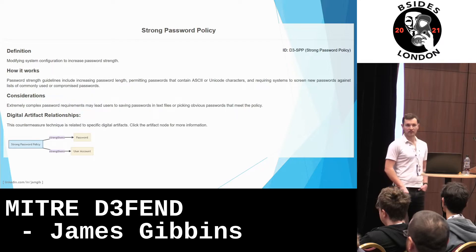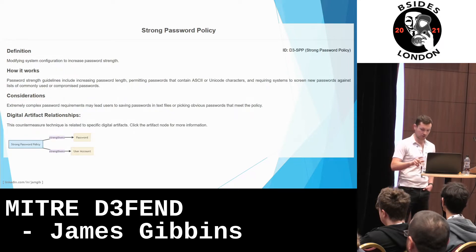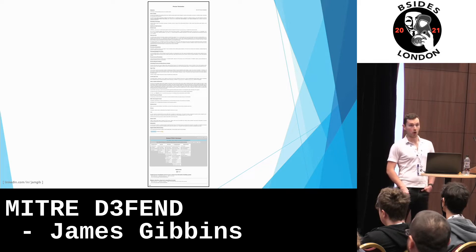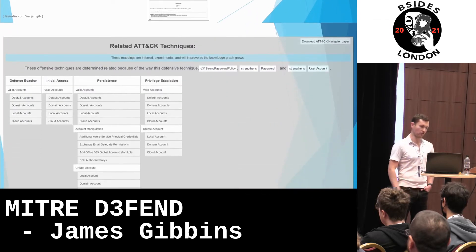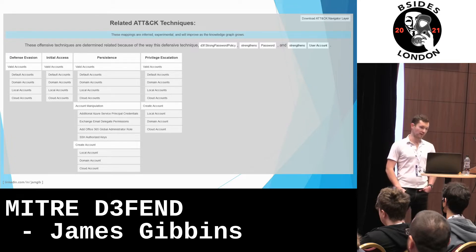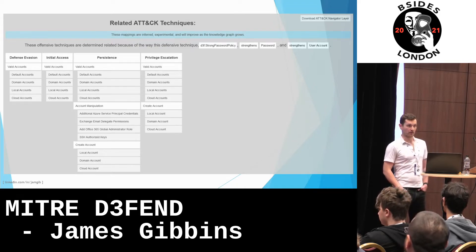Below that is digital artifact relationships, which I will come back to in a bit. For strong password policy, the introductory section is quite short. Some countermeasures, like process termination, have a lot more information. Strong password policy and how it relates to ATT&CK: in this case, you can see it's got valid accounts, account manipulation, and create account — all stuff to do with accounts, as you'd expect.